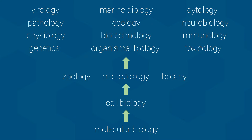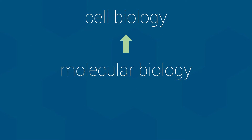Notice the big three in the middle: Zoology, Botany, and Microbiology. Coincidentally, these correspond to the three biology departments here at UBC. The big three are built upon common concepts that form what is known as cell biology, which is itself built upon concepts of what we call molecular biology. But that begs the question: what are cell biology and molecular biology built upon?